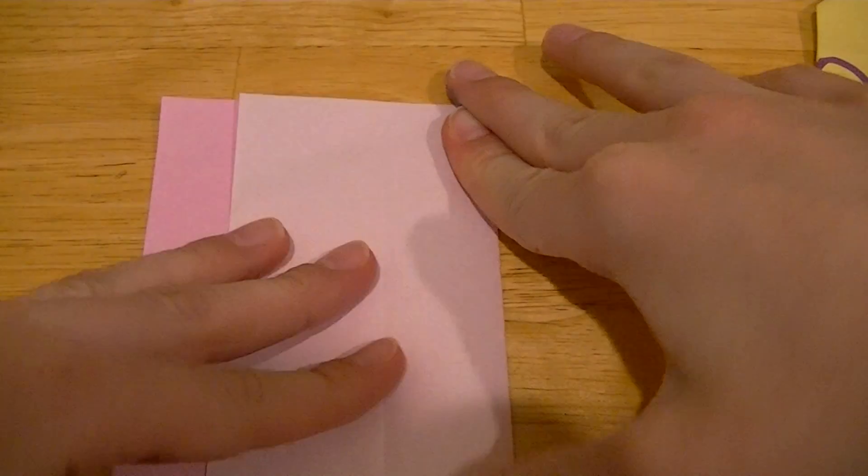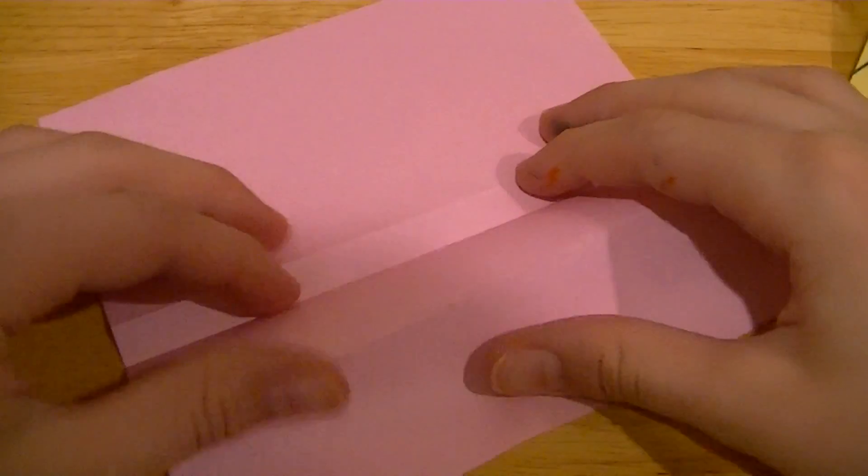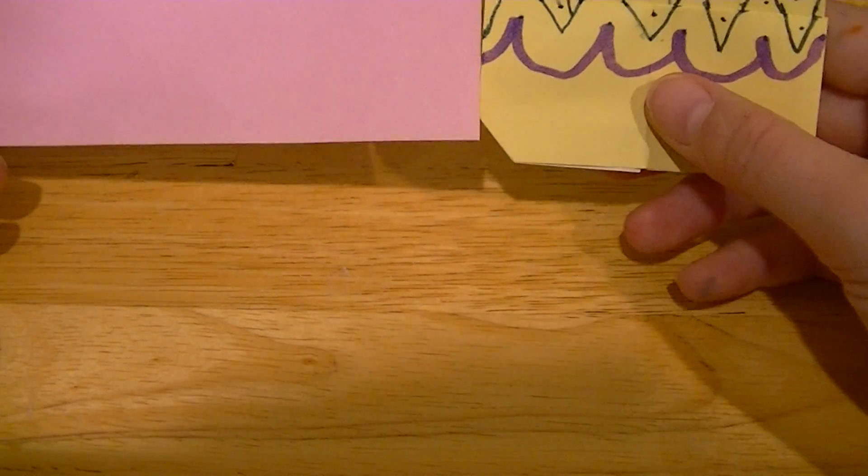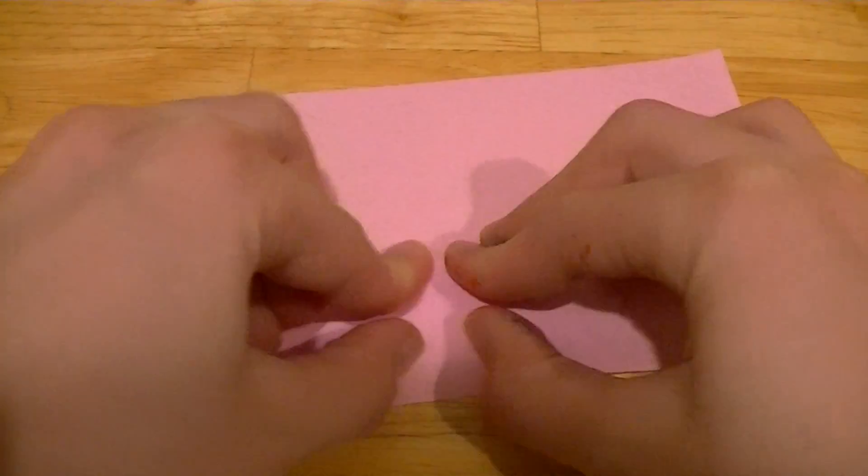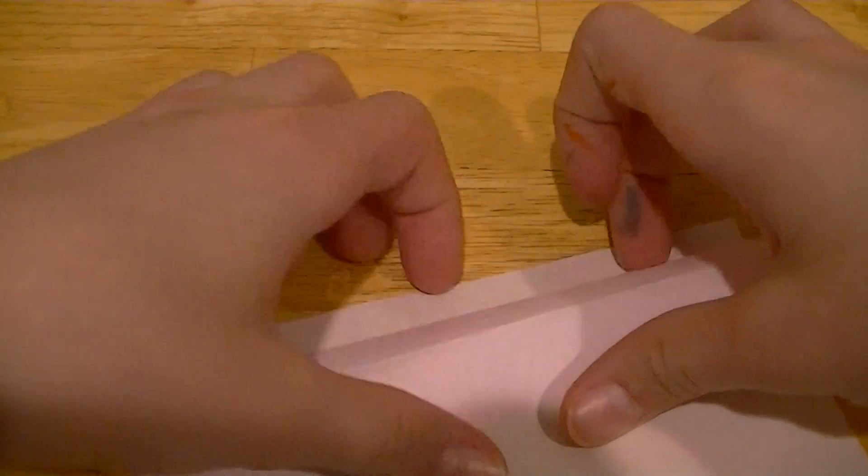And crease sharply. Now that you have that, you should be left with something like this. Now we're going to crease sharply. And then we're going to unfold and turn around.